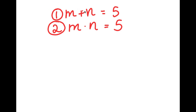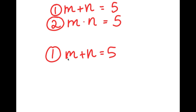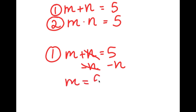My first equation is m plus n equals 5, and what I'm going to do is rewrite this so I get the value of just one of these variables. I can choose any one — for the sake of this video, I'm going to choose m. To get the value of m, I have to get rid of n by subtracting n on both sides. These two cancel out, and I get m is equal to 5 minus n.